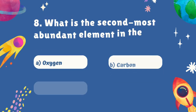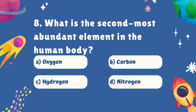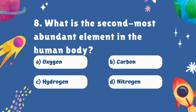Question number eight. What is the second most abundant element in the human body? Is it A. Oxygen, B. Carbon, C. Hydrogen, or D. Nitrogen? The correct answer is B. Carbon.